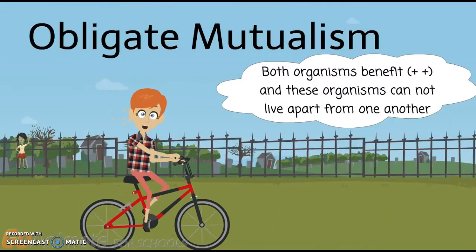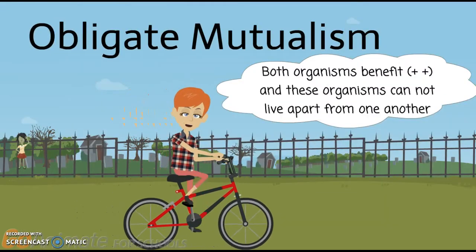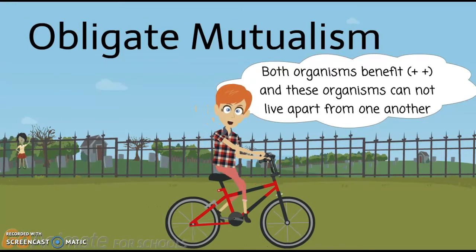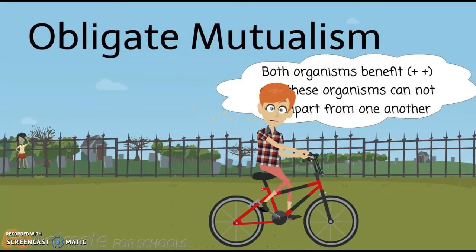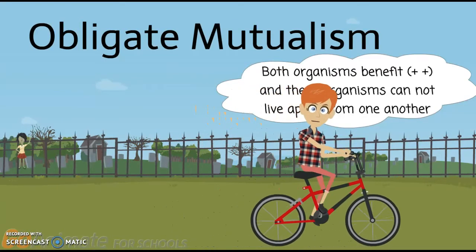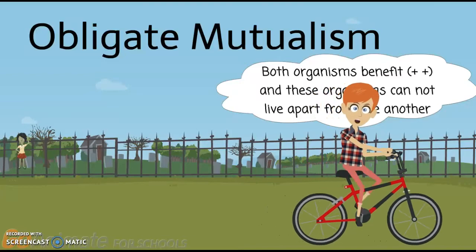Obligate mutualism is a relationship where both organisms benefit. However, the individuals cannot survive without the other, so the organisms are obligated to rely on each other.